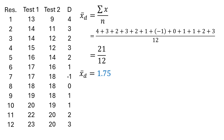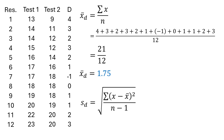We need the mean to find the standard deviation, so be careful — if you get the wrong mean, the rest of the values will also be wrong. Similarly, any mistake in the difference column will carry through. The standard deviation is the square root of the variance. The formula for variance is the sum of (x minus mean) squared, divided by n minus 1. Here x refers to the difference values D, and the mean is 1.75.